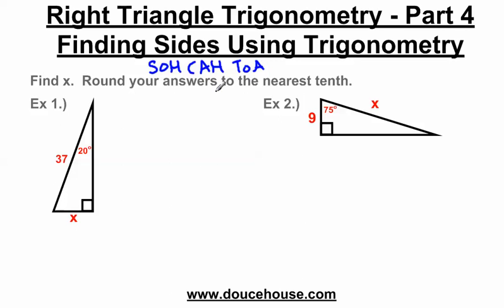Let's jump into this. First, I'm going to label the hypotenuse — that's the longest side, opposite the 90-degree angle. According to this angle, x is the opposite side of this triangle, and the adjacent side is the last side. The hypotenuse has a number with it, which is useful. The adjacent has nothing next to it, so I can ignore the adjacent side. I need to find which trigonometric function has both an H and an O in it, and that leads me to sine.